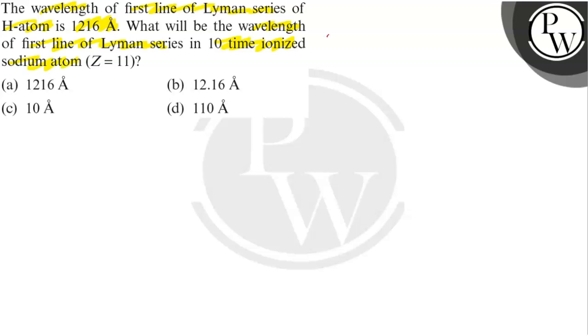So, what is the key concept of this question? Key concept is Rydberg's equation: 1 by lambda equals to R Z square, 1 by N1 square minus 1 by N2 square.